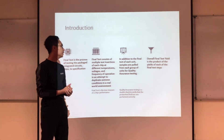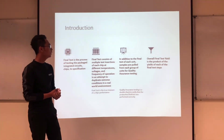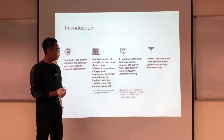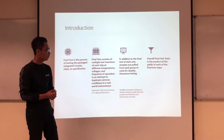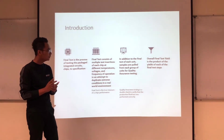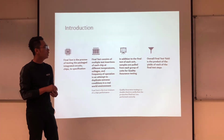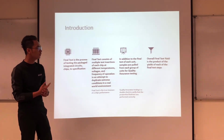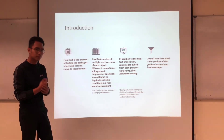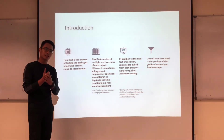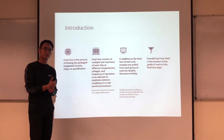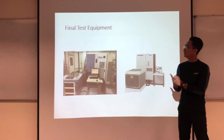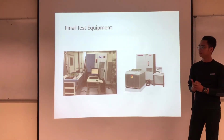In addition to the final test of each unit, a sample is pulled from each group of units for quality assurance testing. Overall, final test yield is the product of the yield of each of the final test steps. This shows the final test equipment.